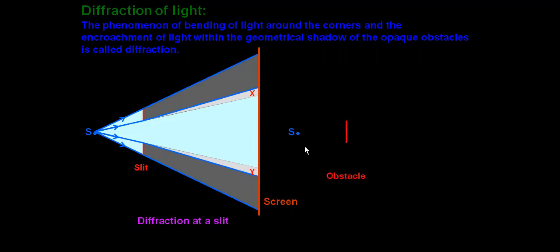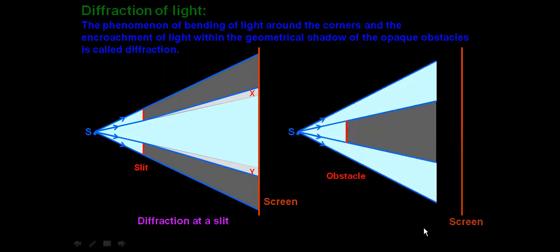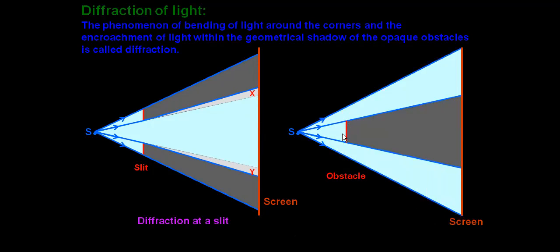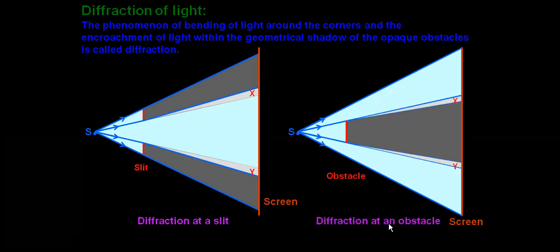Consider another case: the source is in front of an obstacle and behind the obstacle there is a screen. We expect that due to the straight-line path of light the obstacle will cast a shadow on the screen as shown in the figure. But due to the bending of light at the corners of the obstacle, the shadow region has decreased and encroachment of light in the shadow region has occurred, which is called diffraction at an obstacle. Here the XY region is the region of diffraction.